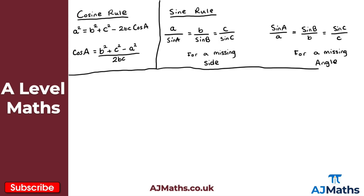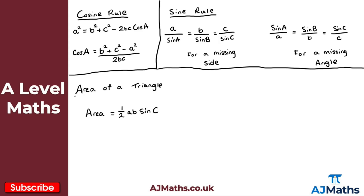Let's box off the sine rule. Finally, we need the formula for the area of a triangle, which allows us to find the area of any triangle. The formula is: Area = ½·ab·sin(C). Those are the three formulas in our toolkit. We'll use these throughout this video and in exam questions, so do take note of them. Now let's move on to some practice questions.